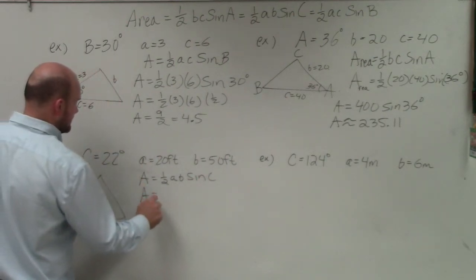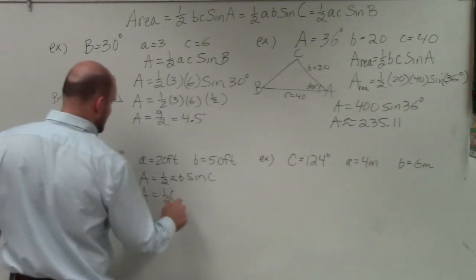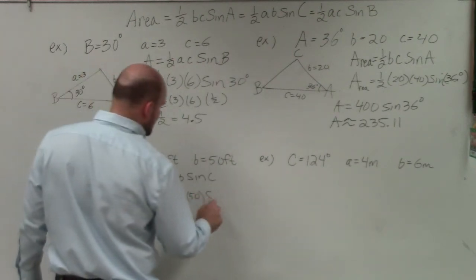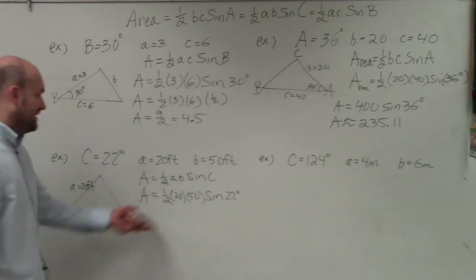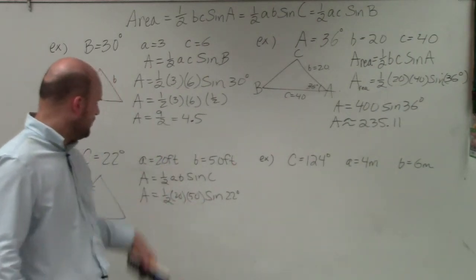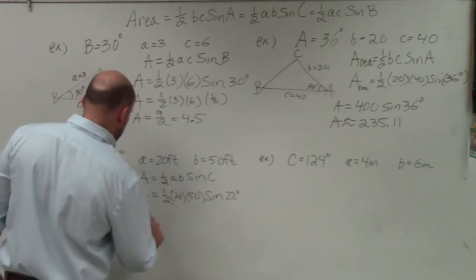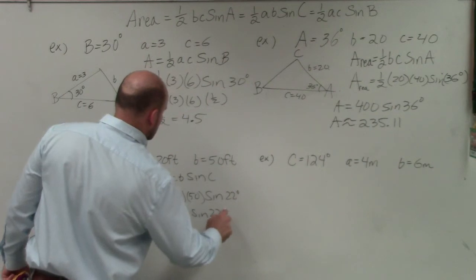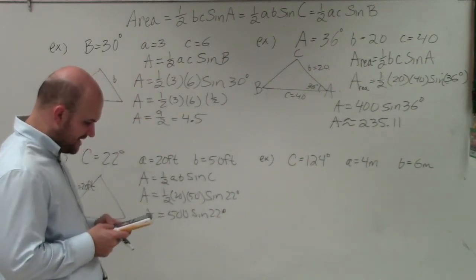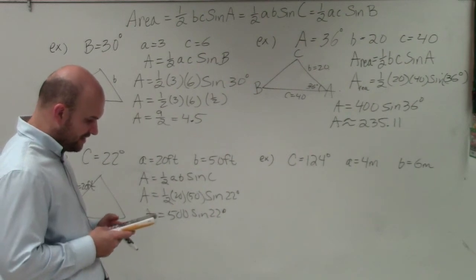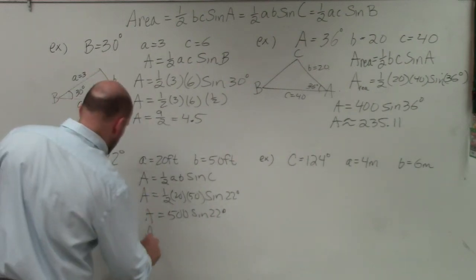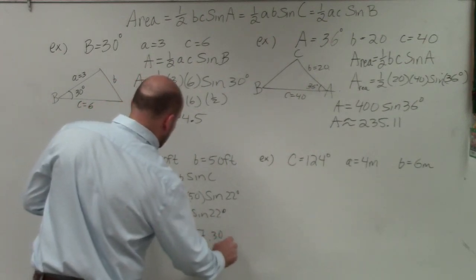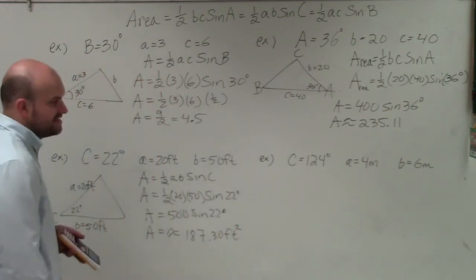So anyways, I have area, which is just going to be A equals 1/2 lowercase a times B times the sine of C. Remember, A represents the area. So I have 1/2 times A, which is 20, times B, which is 50, times the sine of C, which is 22 degrees. And again, I can kind of multiply my numbers here before getting a sine. 1/2 times 20 is 10. 10 times 50 is 500. A equals 500 times the sine of 22 degrees. So now I just type in my calculator, 500 times the sine of 22 degrees, and I get approximately 187.30. And then I've got to make sure I include my measurement, which is feet squared.